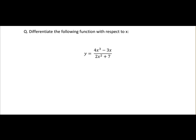So this is our example, we are differentiating 4x cubed minus 3x over 2x squared plus 7. So we obviously apply the quotient rule because it's one function over another.